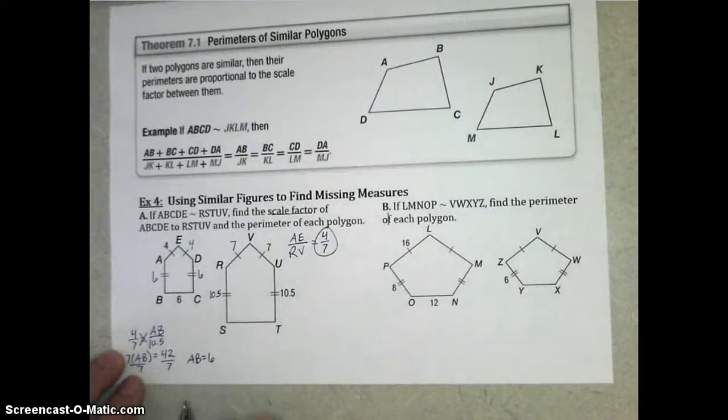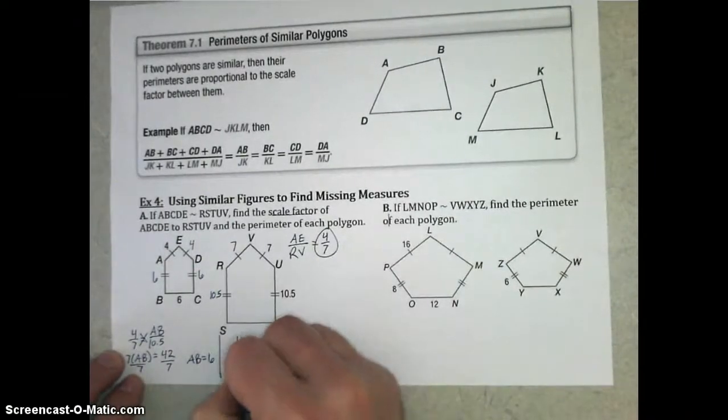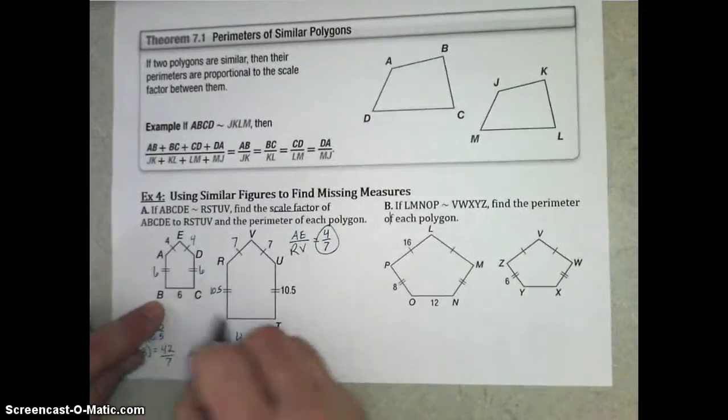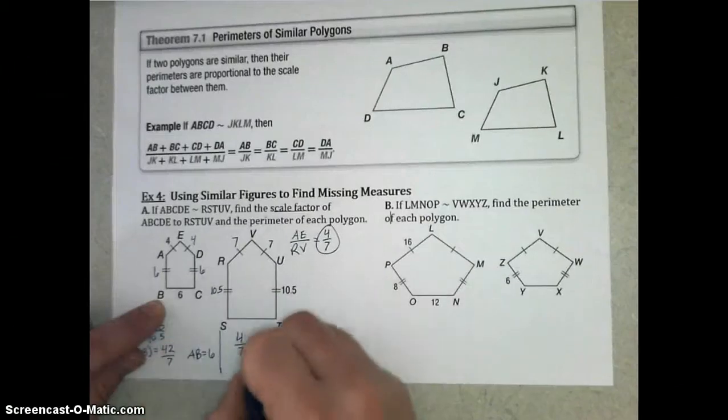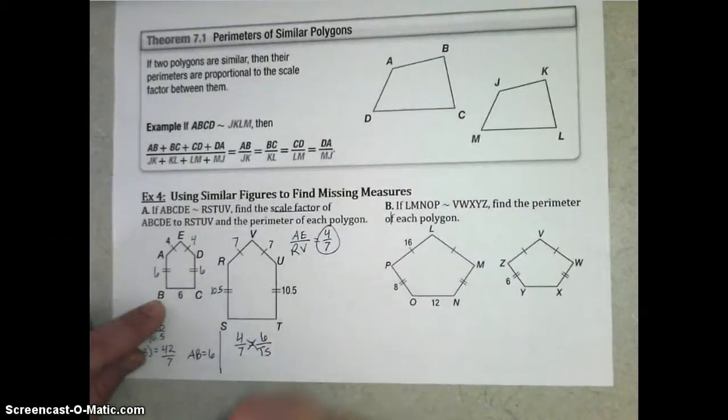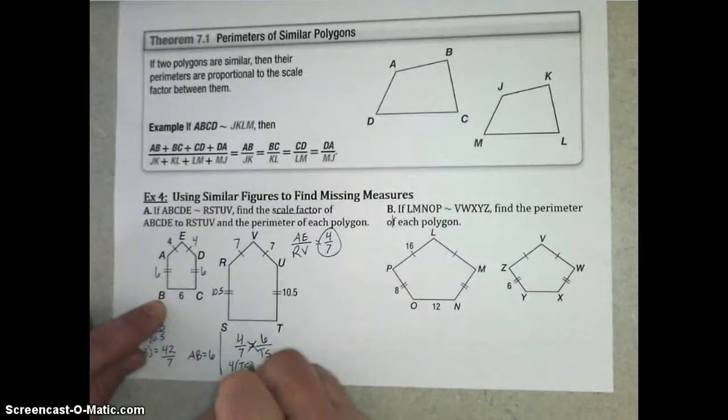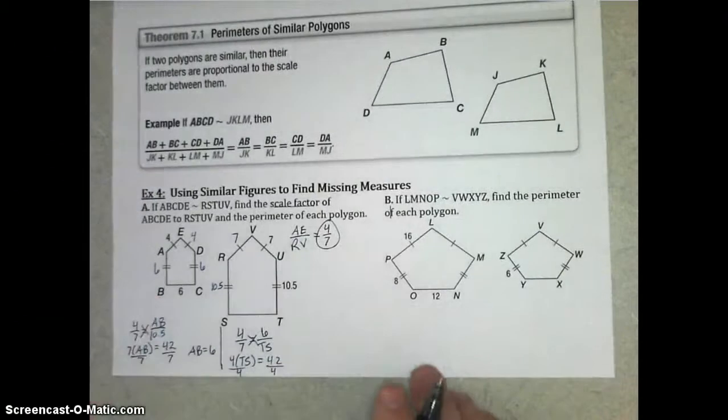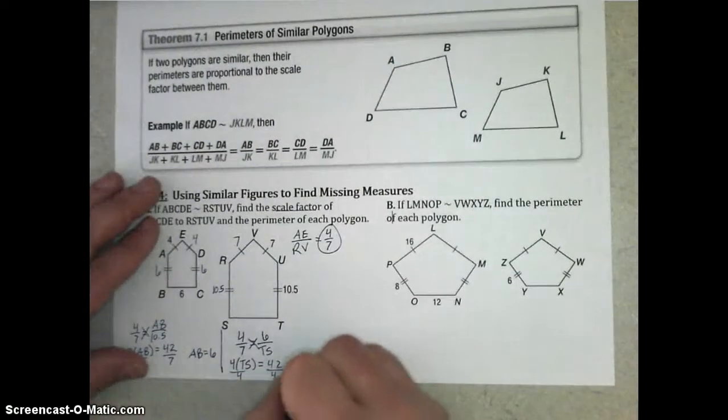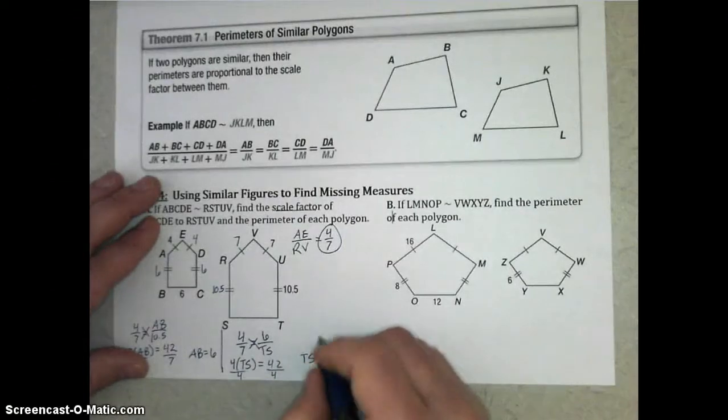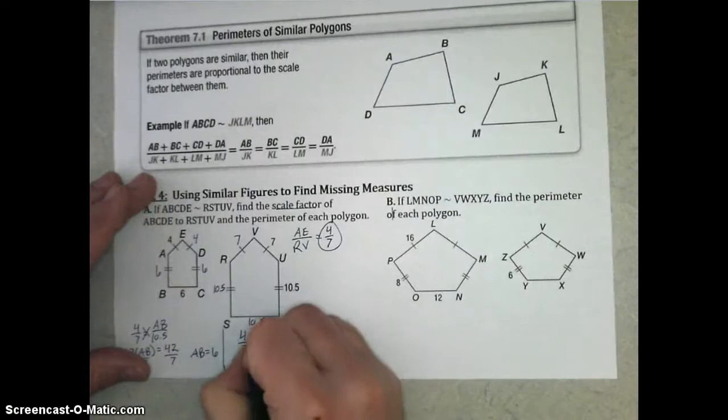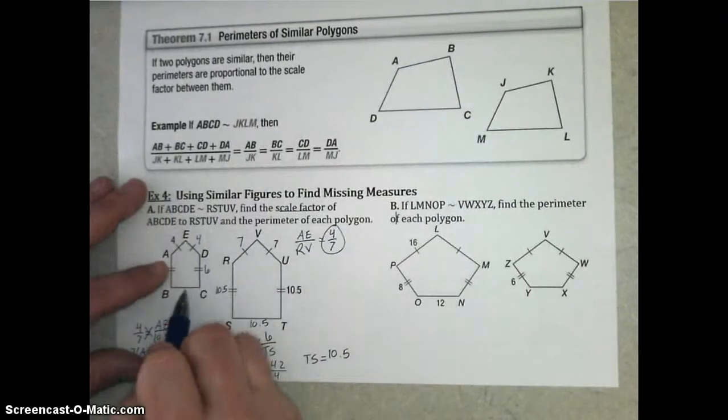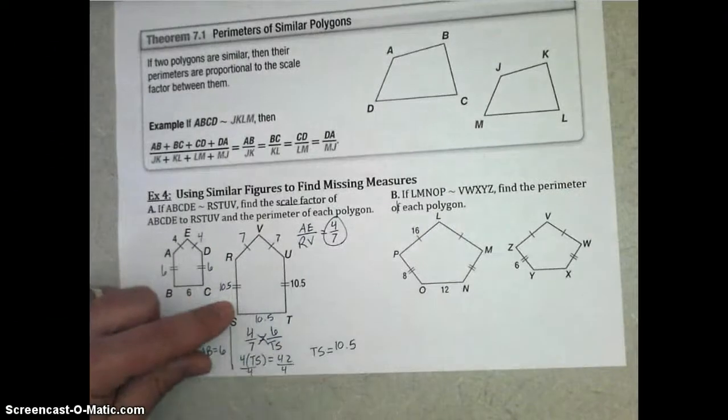Now, we need to use the same process to find ST. You can use that same ratio of 4 7ths. Since I am looking for TS, I'm going to put the 6 value of BC on top and underneath I'll put the TS. Again, cross-multiply, we have 4 times that TS equals 7 times 6 which is 42 and if we divide by 4 on both sides, TS, in fact, is 10.5. And that makes sense because we found that these were both 6 which is also the bottom side so these both being 10.5 would also be the bottom side there.